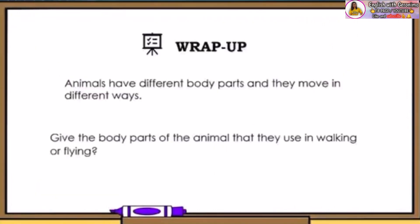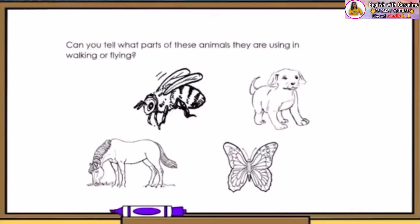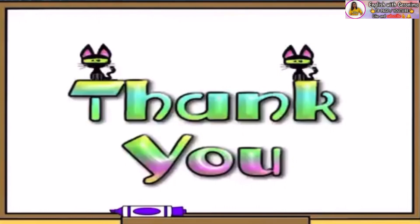The animals have different body parts which they use in moving. Can you tell what body parts these animals are using to move? The bees use their wings to fly. The horses use their long legs and feet to walk and run fast. They use their wings to fly. Lastly, dogs use their feet to walk and run.